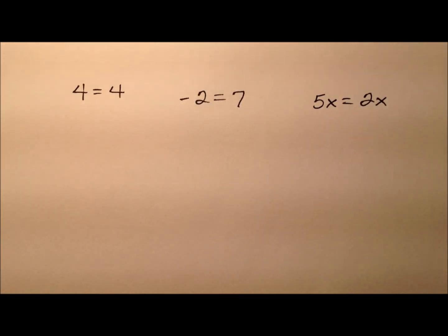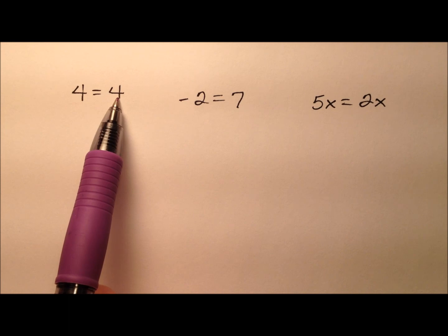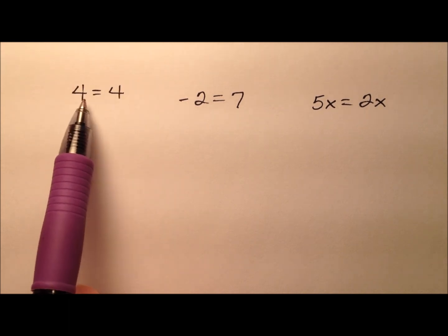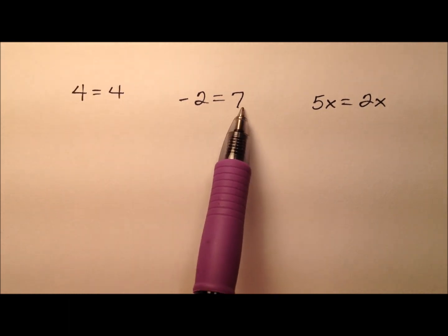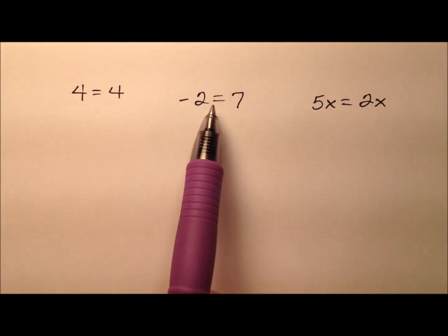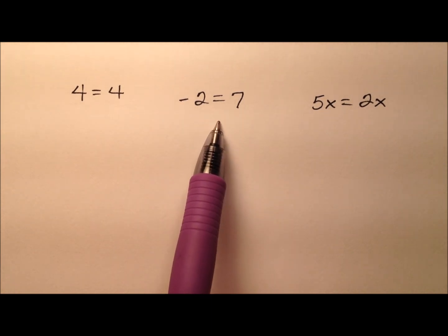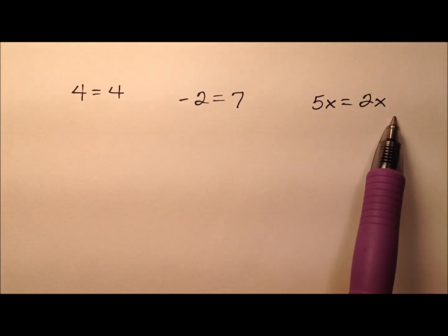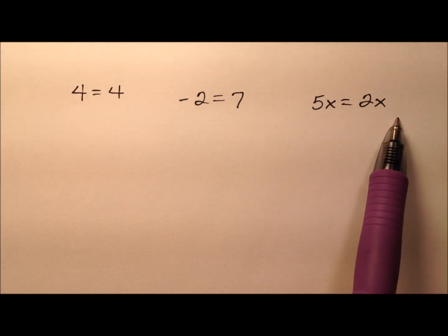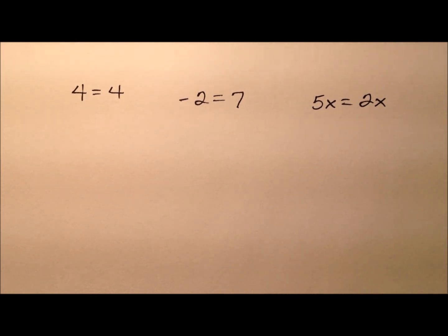To summarize: sometimes when solving equations you'll be left with something that seems out of the ordinary. If all the variables cancel and you're left with a true statement like 4 equals 4, that's all real numbers — infinite solutions. If all the variables cancel and you're left with a false statement like negative 2 equals 7, that's no solution, because no matter what you plug in it will never work. And in the third case, when all the numbers cancel and you're left with something like 5x equals 2x, the value for that variable has to be 0.